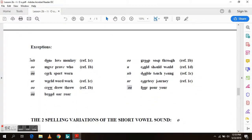And here are the exceptions. As an uh sound in done, love, monkey. As an oo sound in move, prove, who. As an or sound in cork, sport, worn. As an er sound in world, word, work. As an oo sound in crew, drew, through.